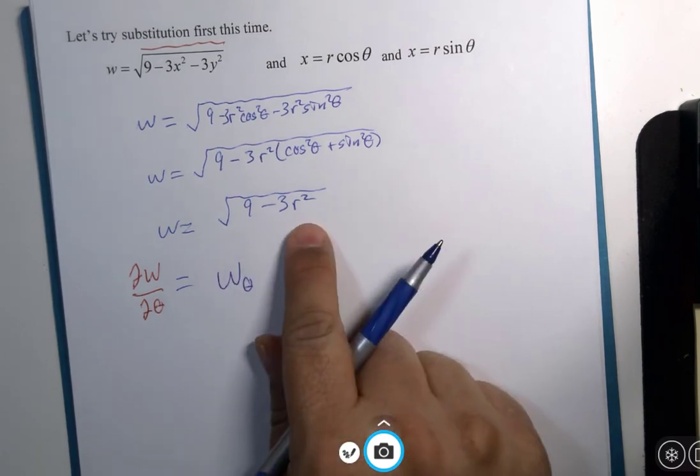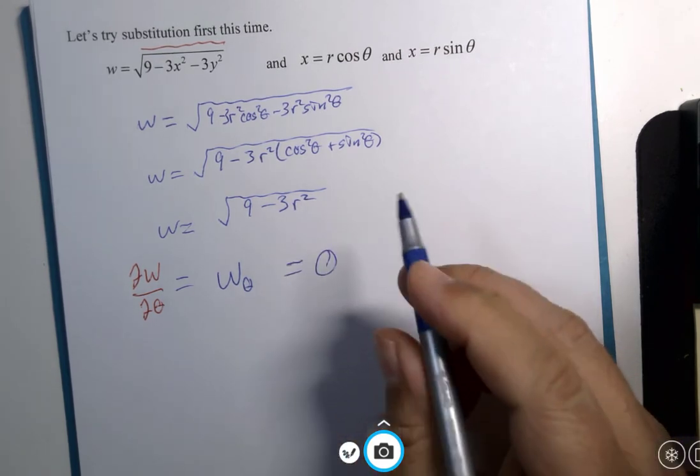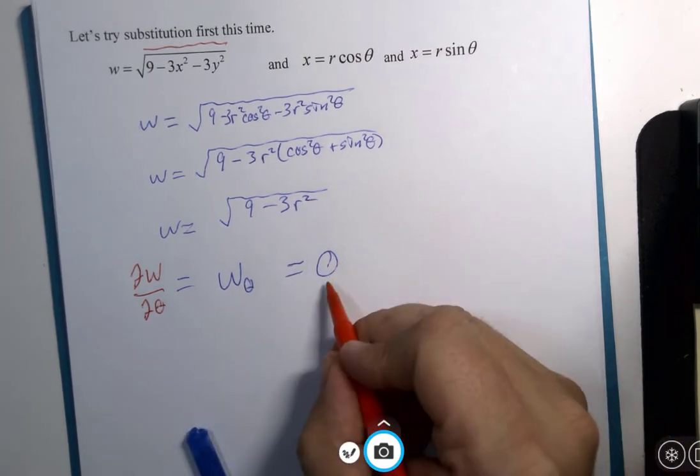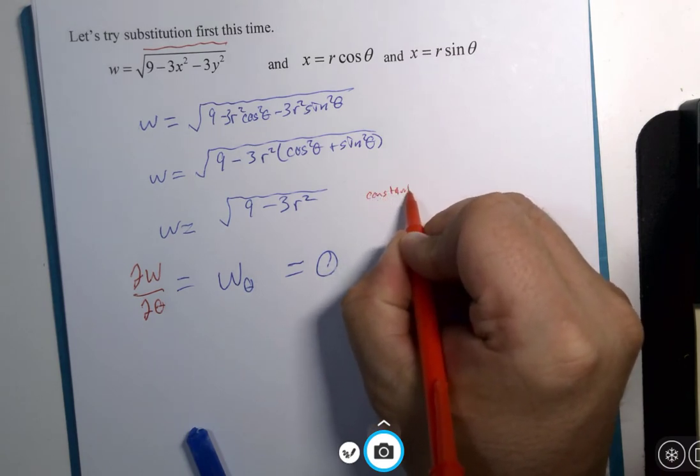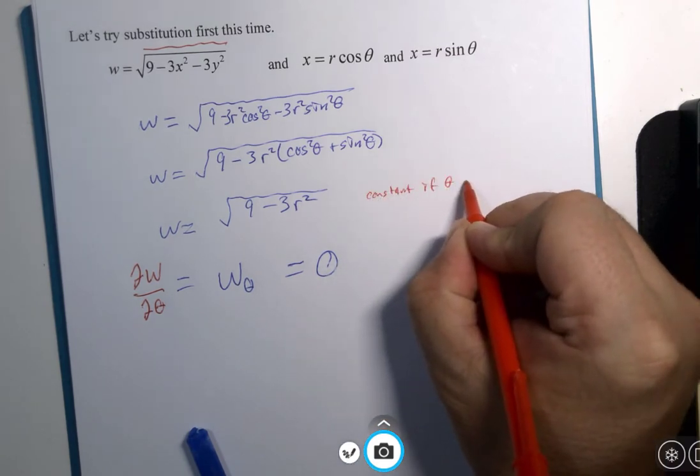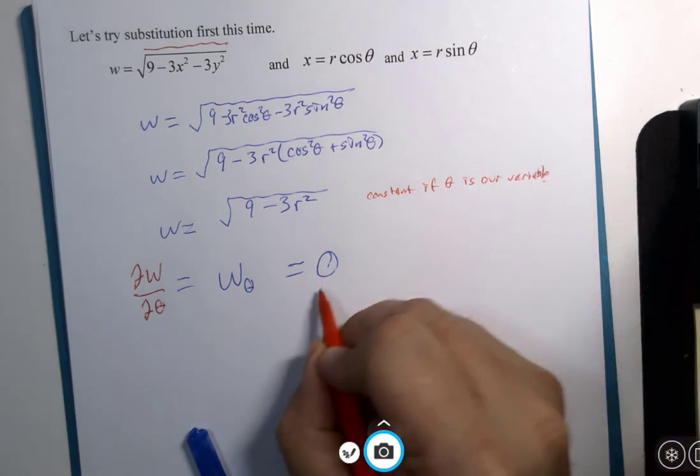Well, if theta is the variable, that means this is a constant. That's going to be zero. This is constant if theta is our variable and the derivative of that constant is zero.